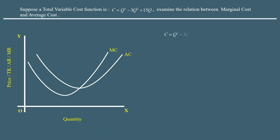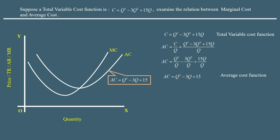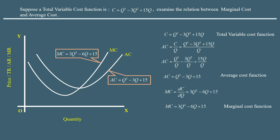The total variable cost function is given. Its average cost function is c over q, obtained by dividing the given function by output q. Its first derivative gives the marginal cost function.